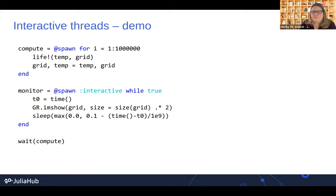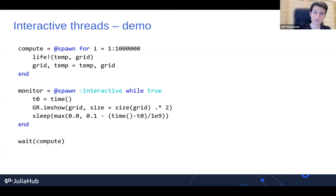How relocatable are the package images? Is it feasible to distribute them to other machines? They're generally not relocatable for a variety of reasons. They're really designed to work as a cache and not as a deployment mechanism. For distributing stuff, system images are more likely to work.